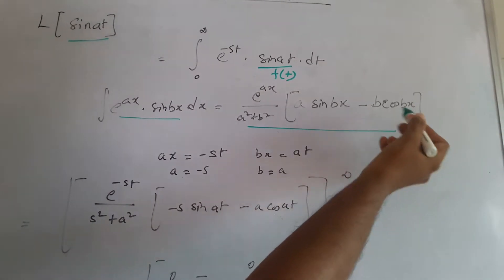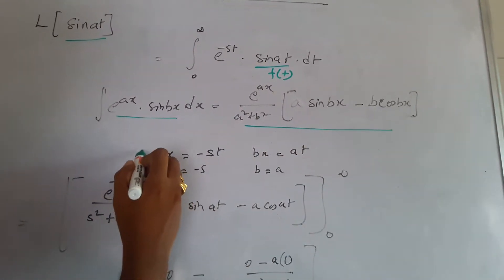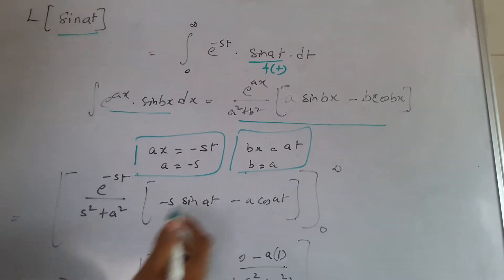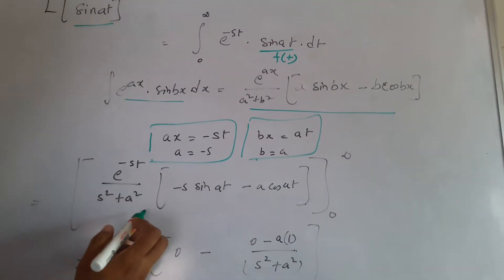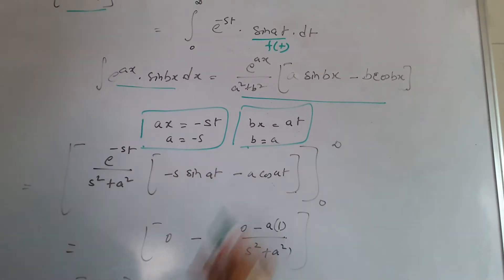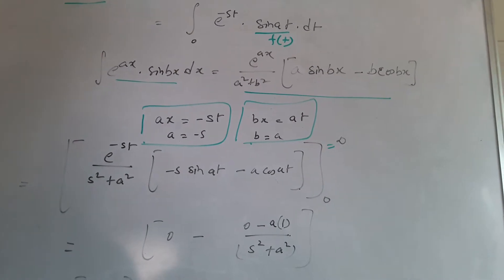Times (a sine bx minus b cos bx). So I write this out and substitute these values. Let us substitute for the upper limit, which is infinity.